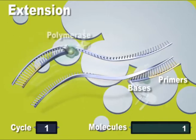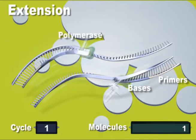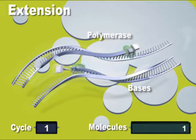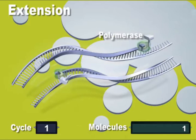In the extension phase, deoxynucleotide triphosphates act as building blocks to extend the newly synthesized DNA strands, thereby doubling the quantity of starting DNA each cycle.